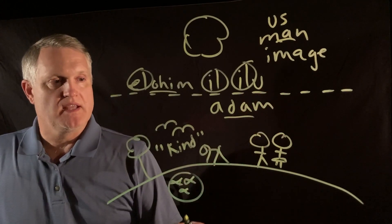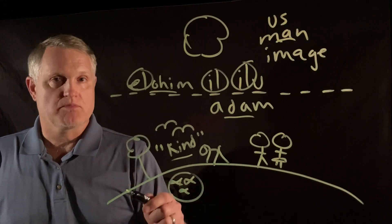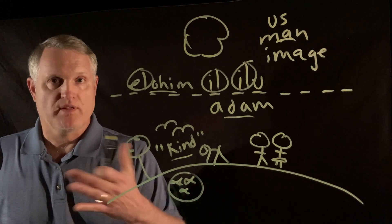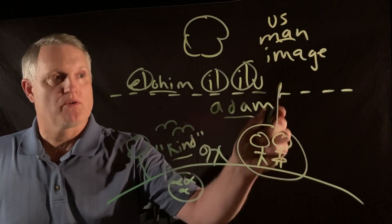in our image. Now again, what I think he's saying there is, again, the original understanding of that would be very simple. He had just said that the animal kingdom would be producing after their kind. I think what he's saying is we are going to make humans, but we're going to make them after our kind.